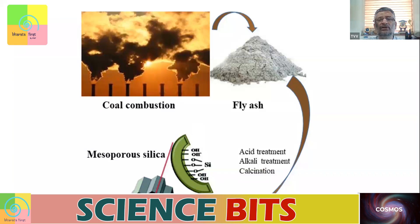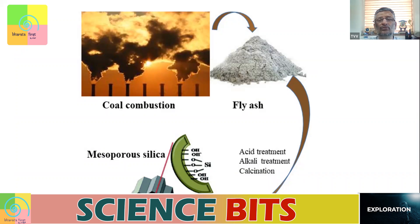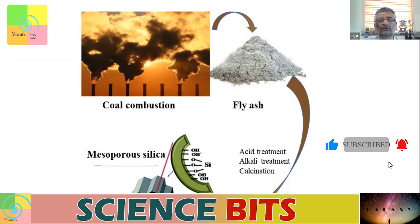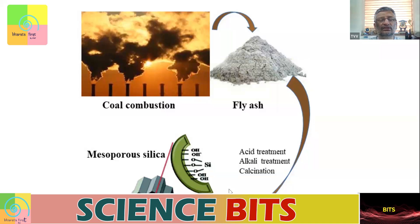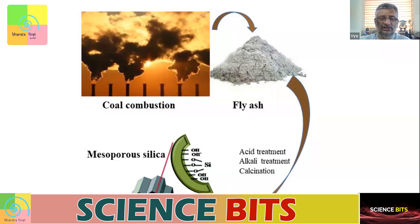People are also looking at fly ash for extracting certain nanomaterials. With some treatment, nanomaterials like mesoporous silica and others can be extracted from fly ash. People are looking at creating wealth out of this waste through such means. Fly ash is a challenge — we need to put it to use, particularly as long as we continue using huge quantities of coal for power production.